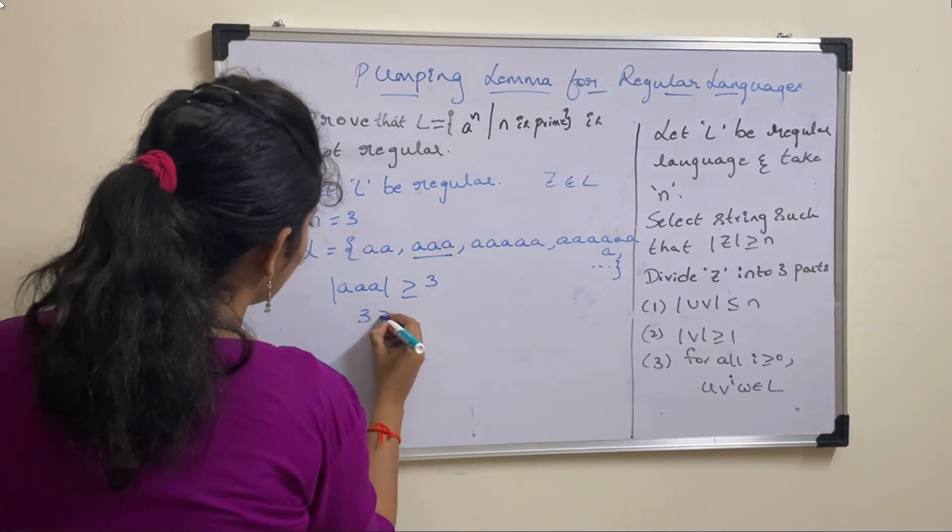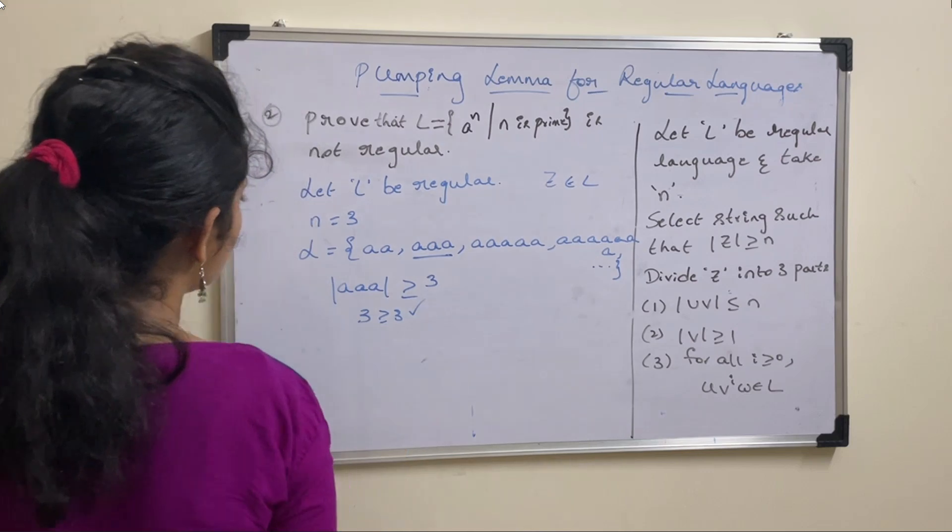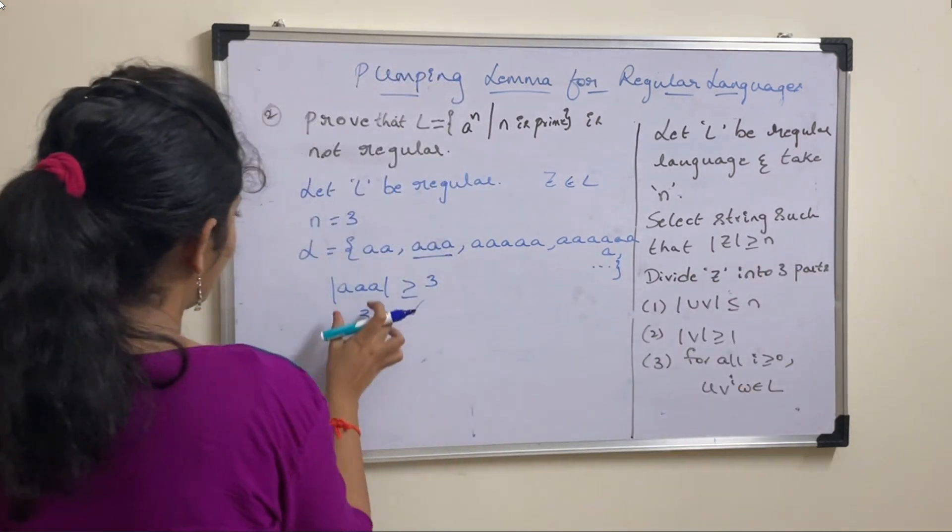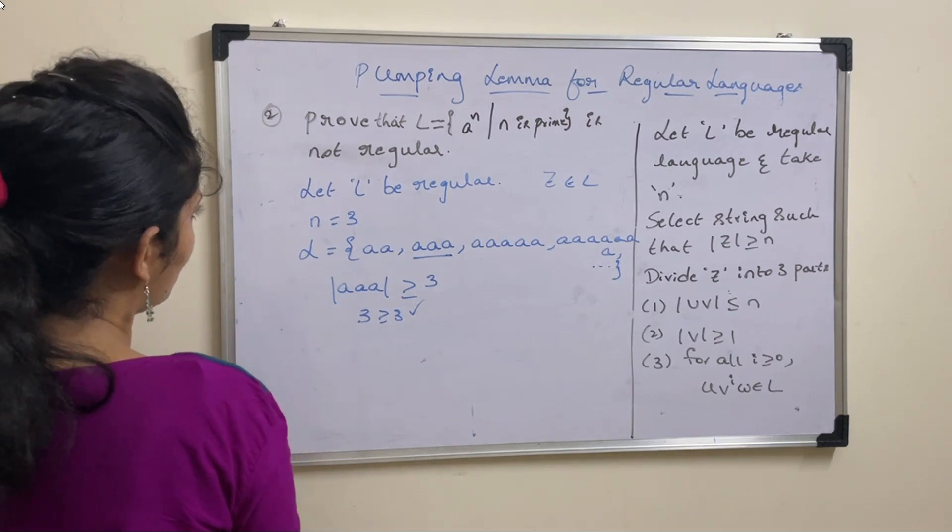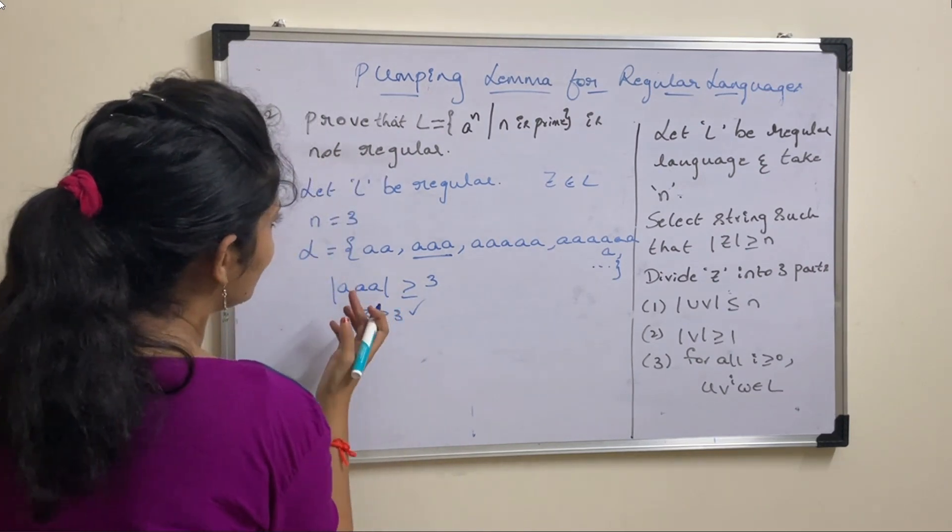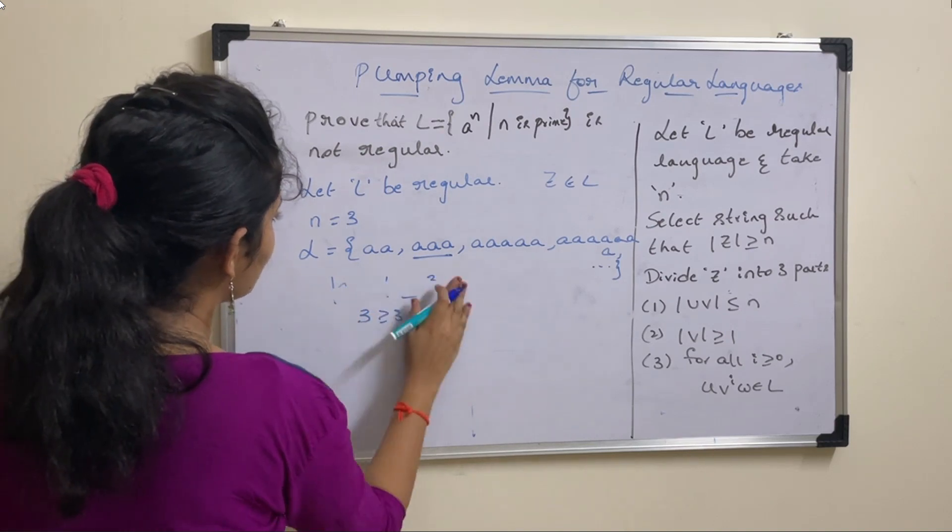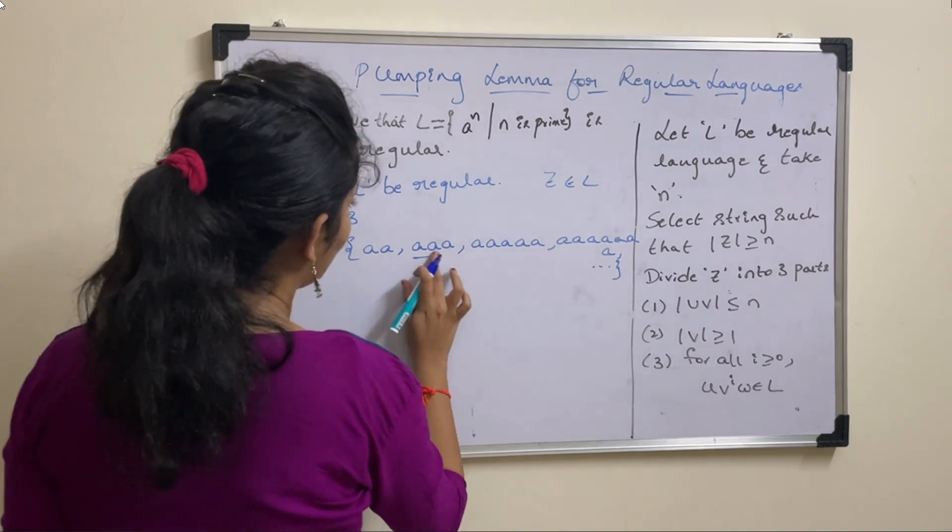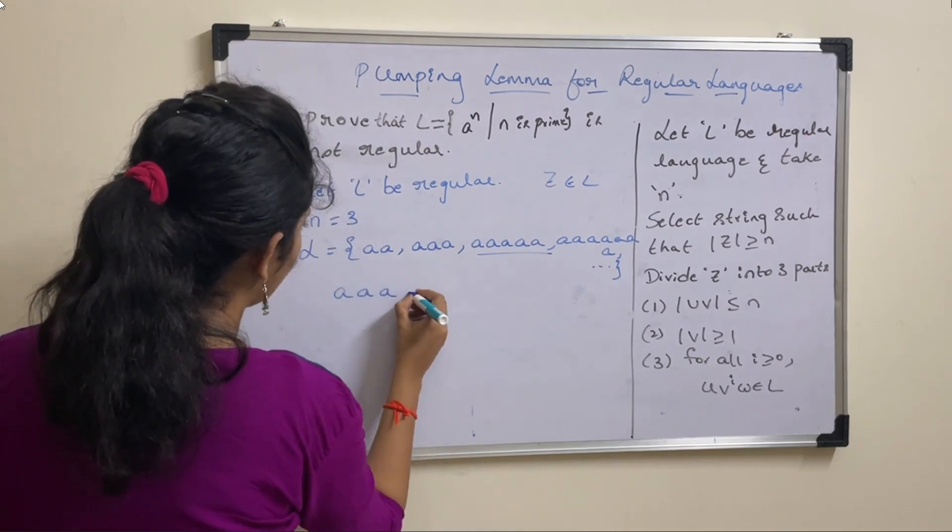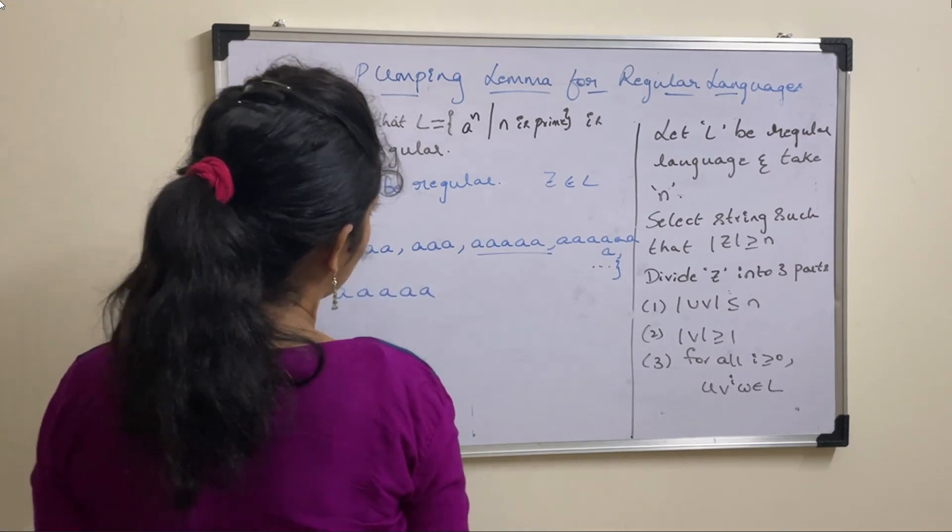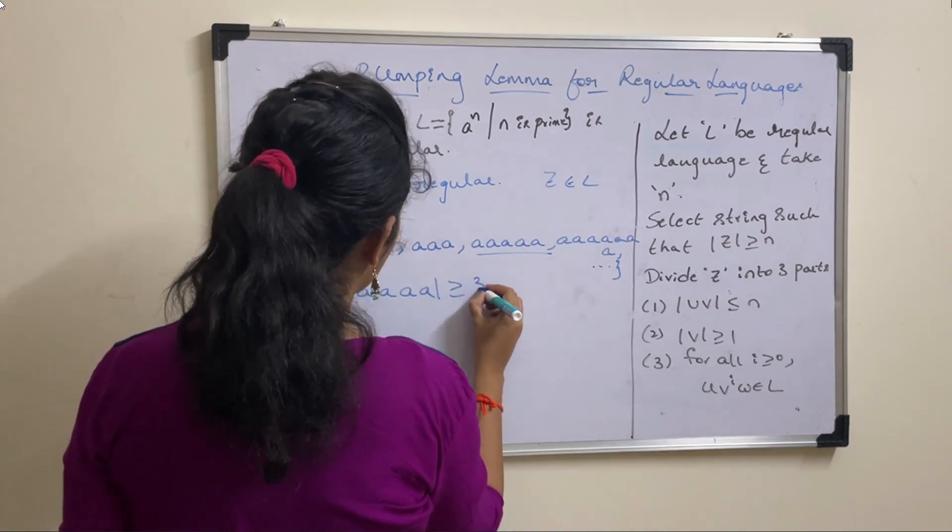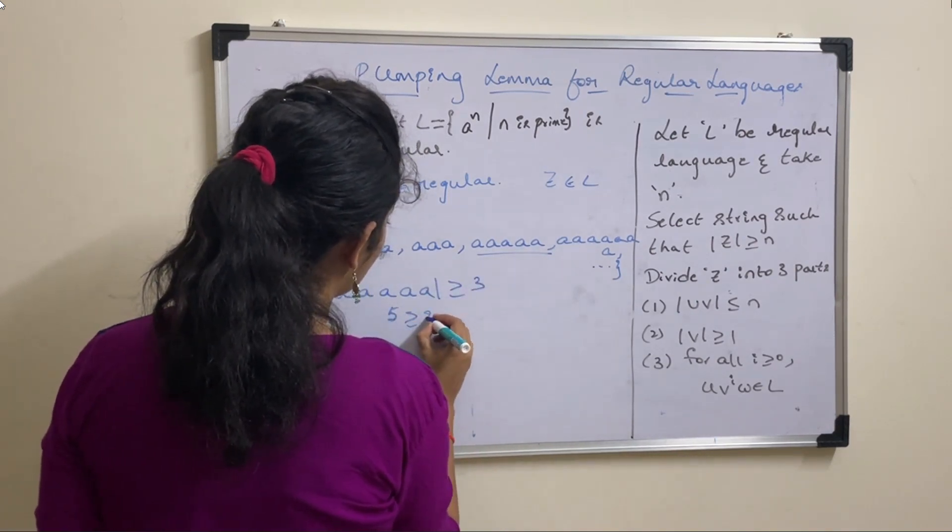Check whether this is greater than or equal to N value. N value is 3, so 3 greater than or equal to 3, condition true. Next divide Z into 3 parts. This is already 3, so instead of that let us take this 5A string. Triple A... So triple A.